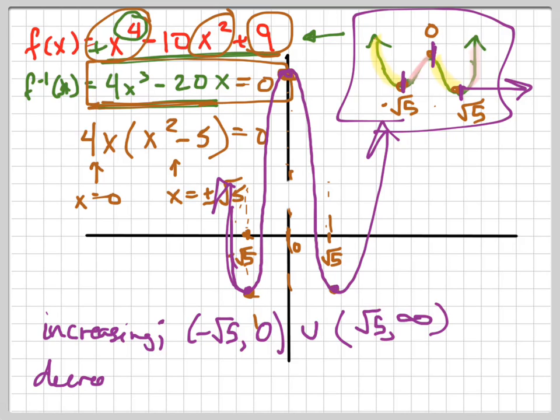And it's decreasing on the other intervals, which are from negative infinity to negative root 5, from there to there, it's decreasing. And then from 0 right here, all the way to root 5.